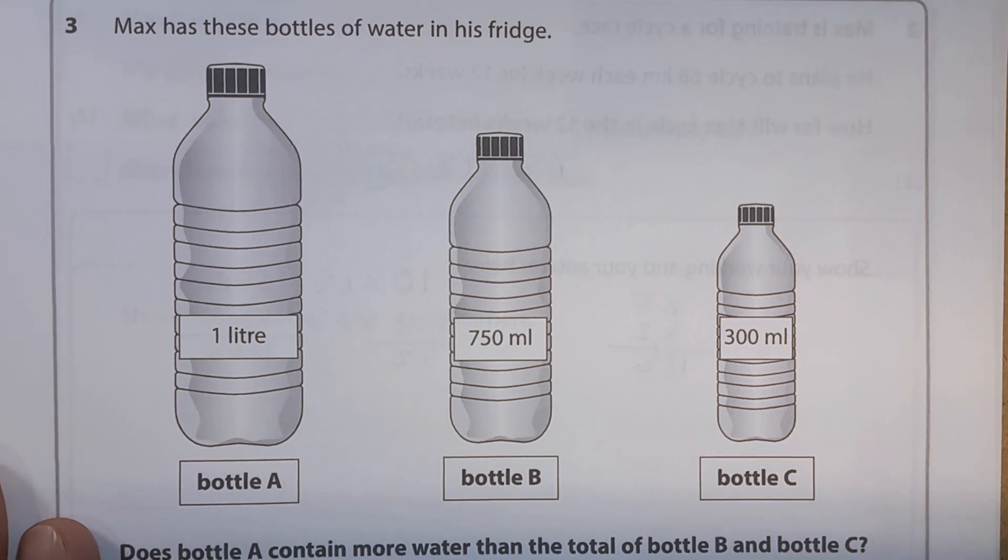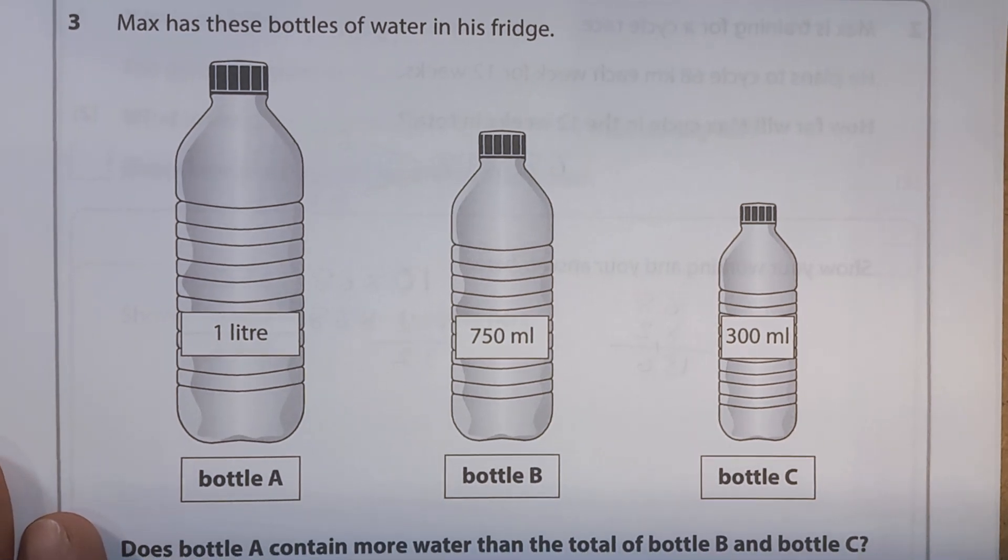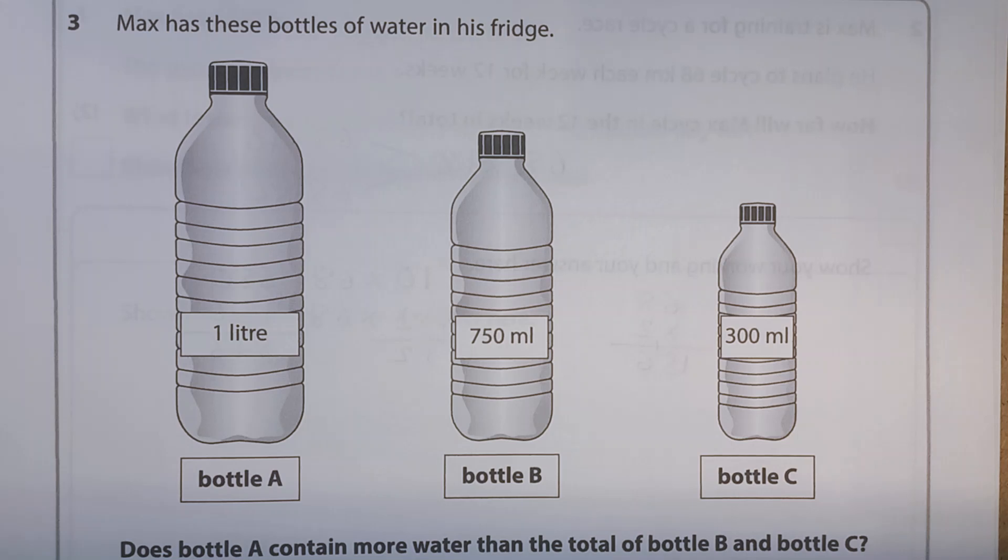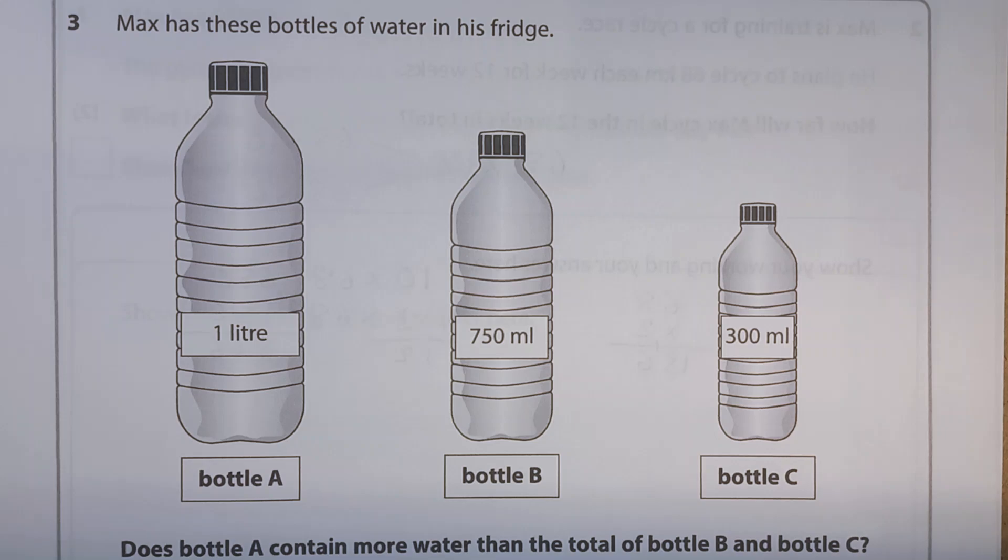Question 3. Max has these bottles of water in his fridge. So we've got bottle A, bottle B, bottle C, and we've got different amounts in each of them.